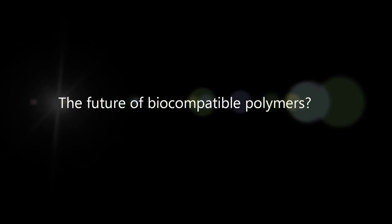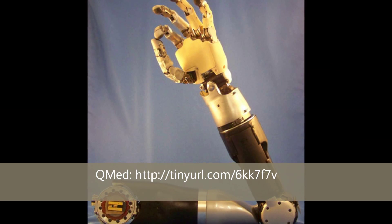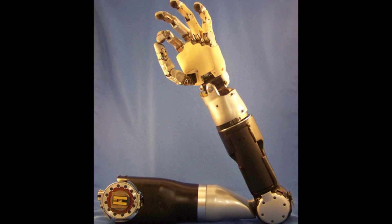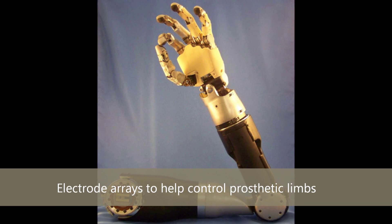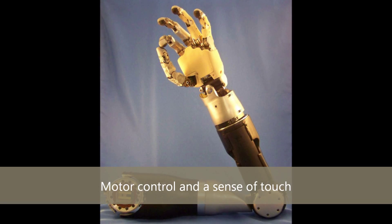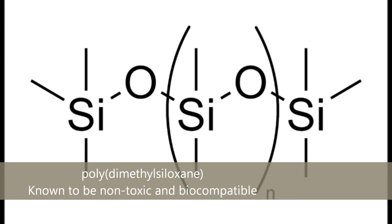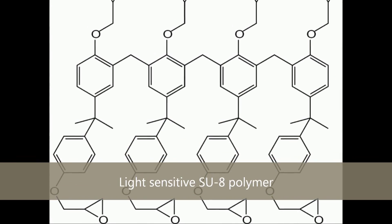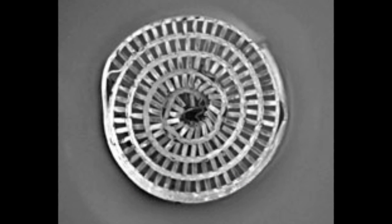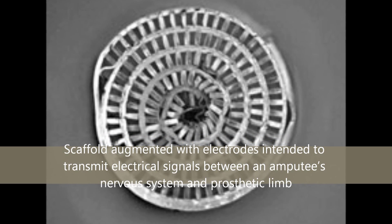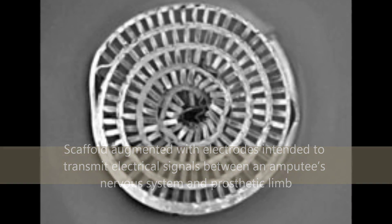So what does the future hold for biocompatible polymers? On April 25th 2011, QMed reported that a team of researchers at the Georgia Institute of Technology in Atlanta are aiming to develop electrode arrays that could help control prosthetic devices. Their goal is to develop prosthetic limbs that feature motor control and a sense of touch. To make this possible, the components are coated in various different polymers, most notably polydimethylsiloxane, which is known to be biocompatible and non-toxic, and the light-sensitive polymer SU8. This, coupled with other structural features, would allow healthy nerve cell growth from the amputee's limb and allow the electrodes on the prosthetic limb to detect these nerve signals and convert them into movement. So we can see that the field of biocompatible polymers is rapidly advancing, and without biocompatible polymers, the medical field would be nothing like it is today.